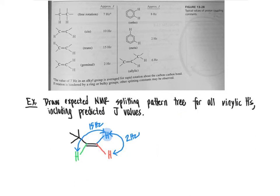That completes the splitting pattern tree for the blue proton. Now for the proton in red: we already have the coupling constant of 2 Hertz to the blue proton sketched in — that's correct because geminal protons have a coupling constant of about 2 Hertz. The other coupling to identify is that the red and green protons are vicinal and cis to one another, and from the chart the best match gives a coupling constant of about 10 Hertz.